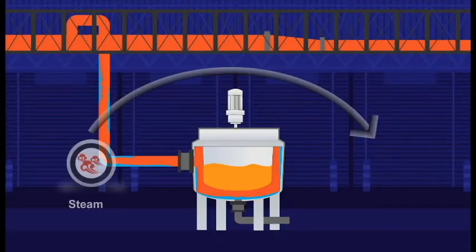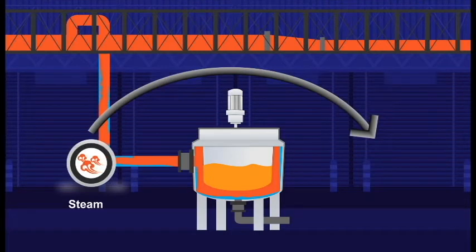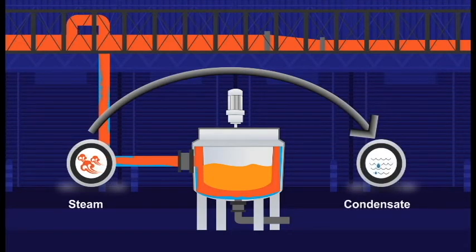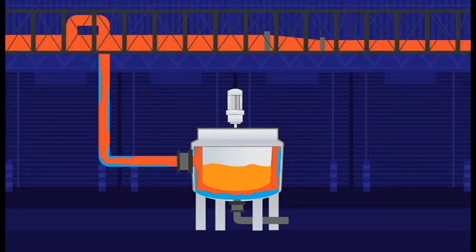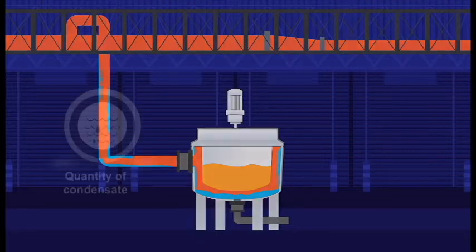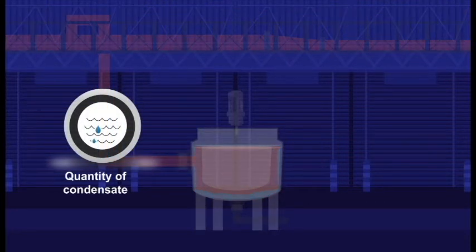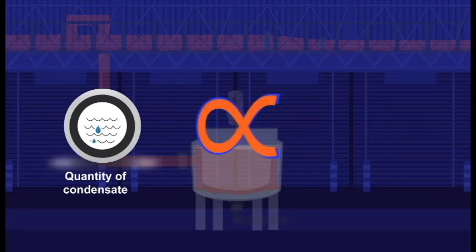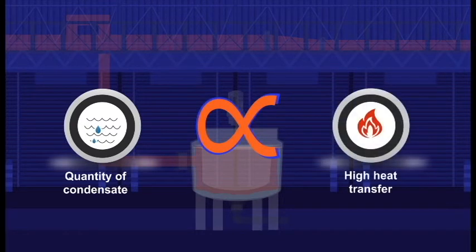Once steam gives off its heat, it turns back into water called condensate. This hot condensate then occupies the space in a heating jacket and must be removed so that steam can flow in. The quantity of condensate formed depends on the amount of heat transfer or the amount of steam condensing.